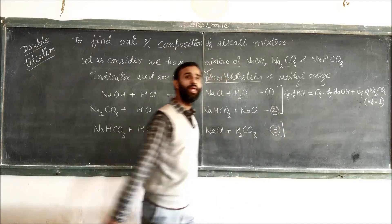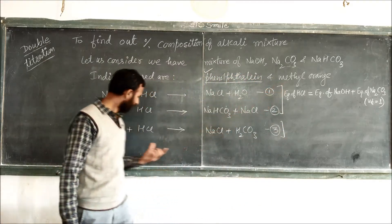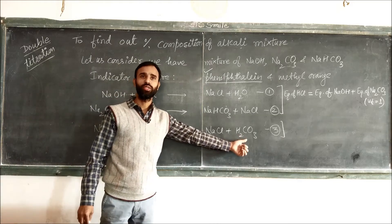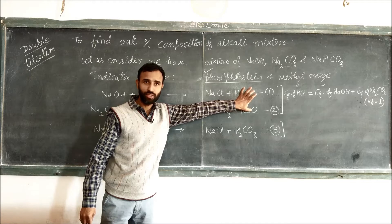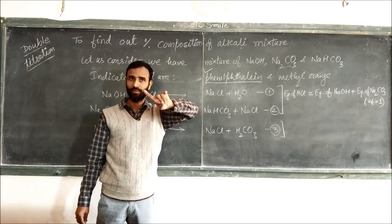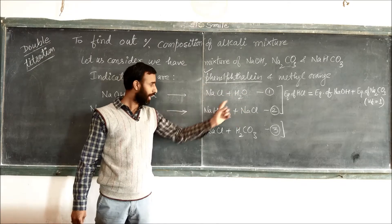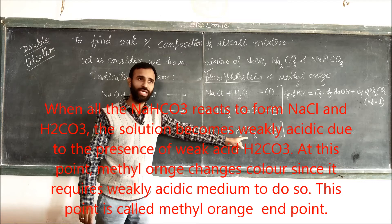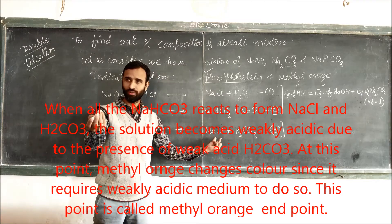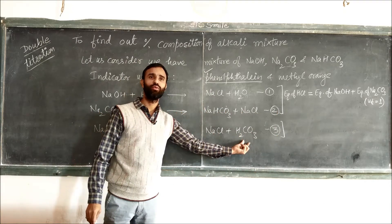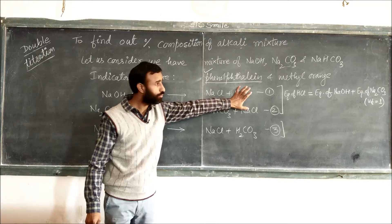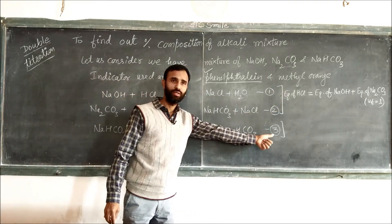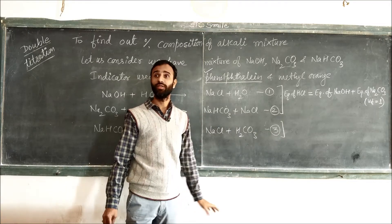Methyl orange shows its color change when all the sodium hydrogen carbonate has reacted to give NaCl and H₂CO₃. Up to the second stage the solution is weakly basic, but at the third stage it becomes weakly acidic due to the formation of carbonic acid (H₂CO₃). Sodium chloride is neutral, but H₂CO₃ is a weak acid, so the solution is weakly acidic at the methyl orange endpoint.